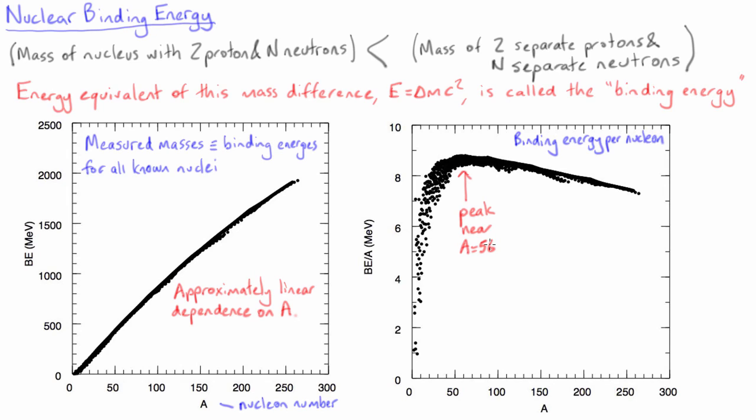In fact, because nuclei around A equals 56 are the most stable, this is one of the reasons that a star, which starts as an almost pure mixture of mostly hydrogen with a bit of helium, can eventually end up having a central core that is mostly iron.